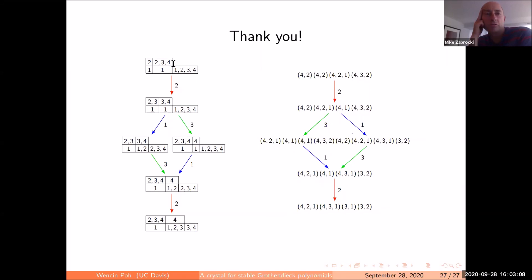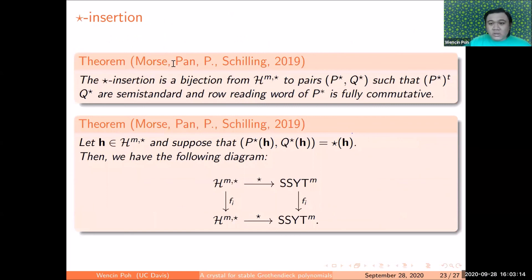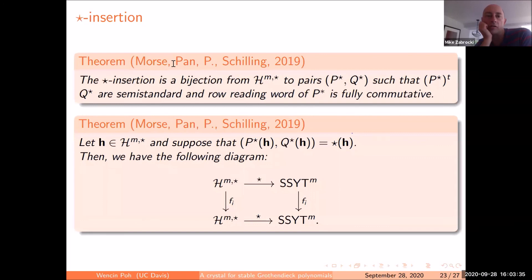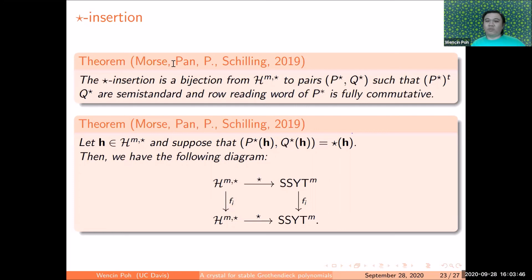Further question: what are the conditions characterizing the P* tableaux? Answer: P* should be conjugate semi-standard, with the column-reading word (read top to bottom in French notation) being a fully commutative word in the zero Hecke monoid. These are in bijection with fully commutative decreasing factorizations; a description for the non-fully commutative case is not yet available.